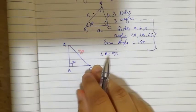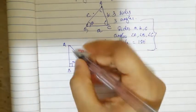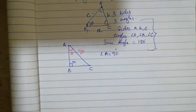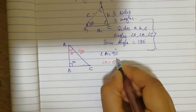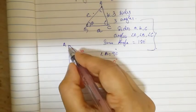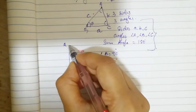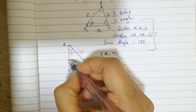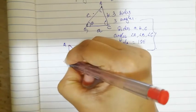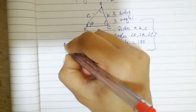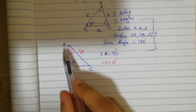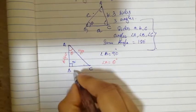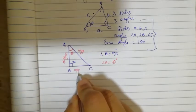In this triangle, we can take angle A as theta degrees. So angle A is equal to theta. With respect to angle A, the side AB is the adjacent side of angle A. What is BC according to angle A? BC is the opposite side of angle A.